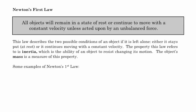Newton's first law specifically states that objects at rest will remain in a state of rest, and objects in motion will remain in a state of motion. And by motion, I mean constant velocity or uniform motion, unless they're acted on by an unbalanced force. This law describes two possible conditions if an object is left alone. It either stays put, or it continues to move in uniform motion at a constant velocity. And this property is known as inertia. Inertia is defined as the ability of an object to resist changing its motion. And the object's mass is a measure of this property.